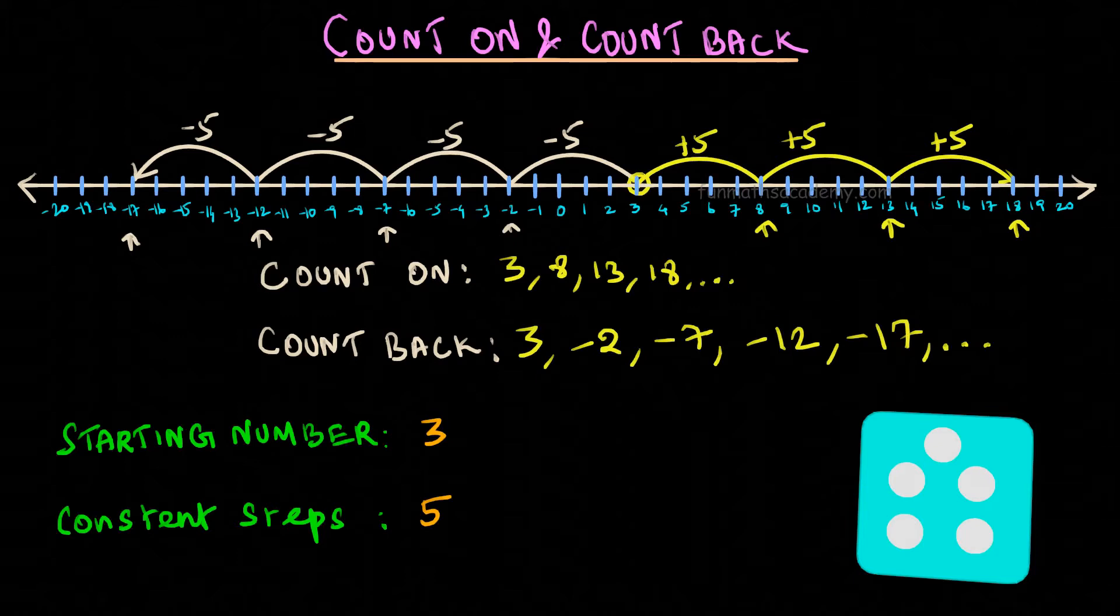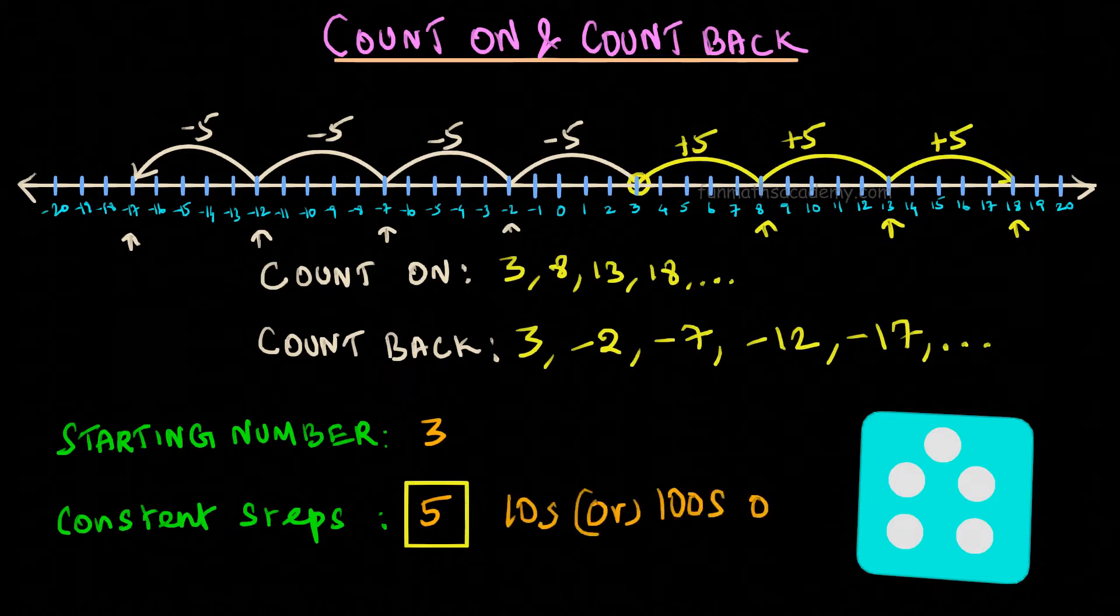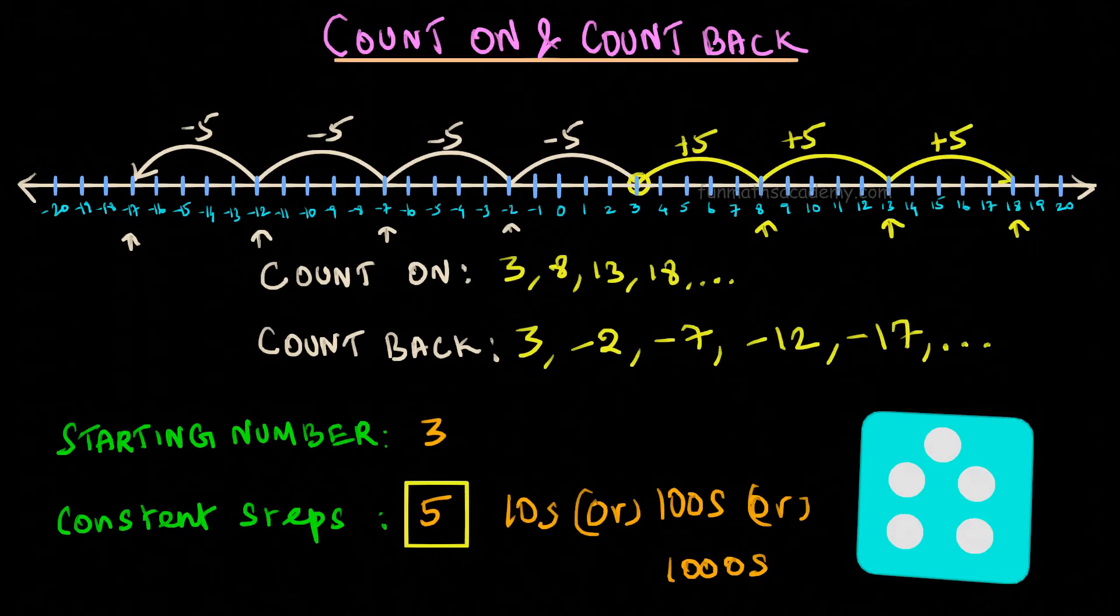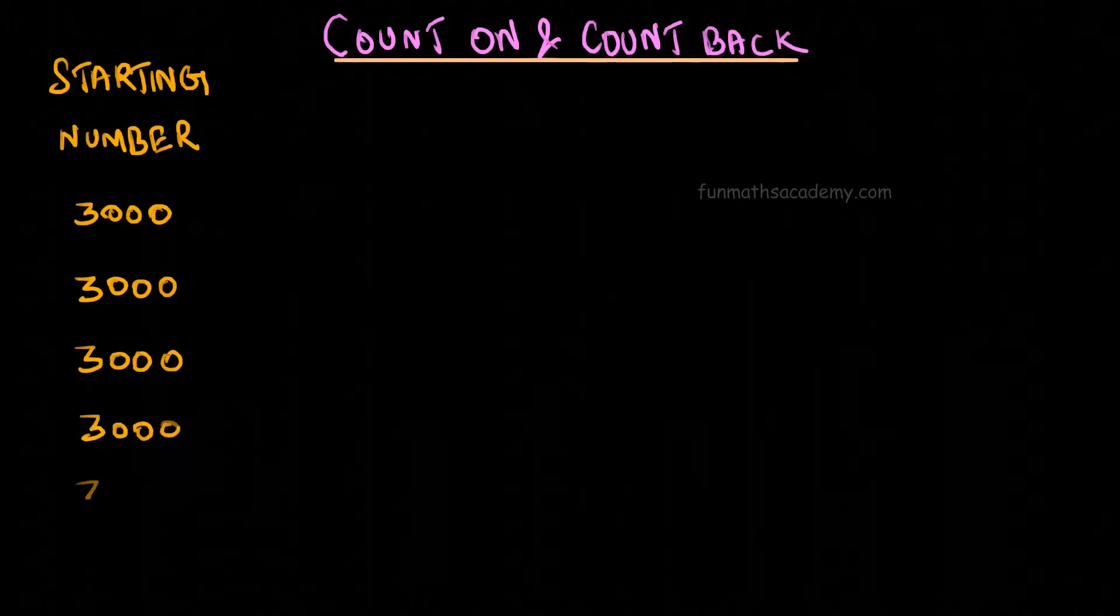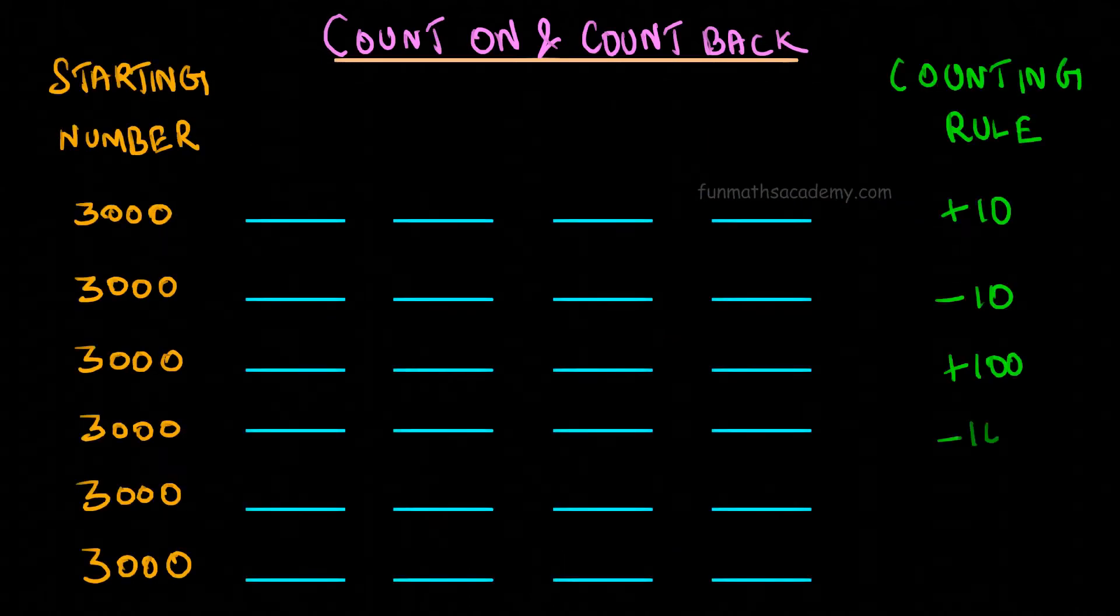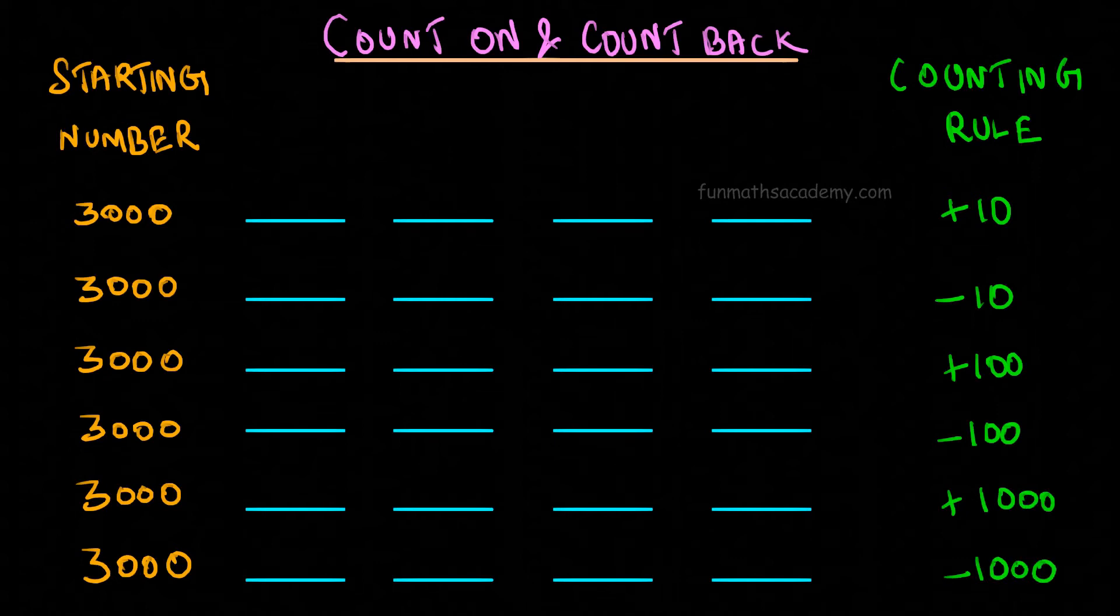This is one-digit skip counting. Skip counting doesn't happen with only one-digit numbers like how we saw in this example. This can happen for tens, hundreds or even for thousands. For example, keeping 3000 as starting number, let us see how the pattern frames for different counting digits.